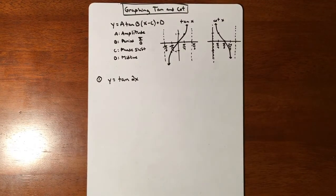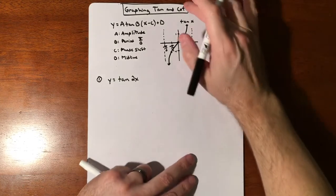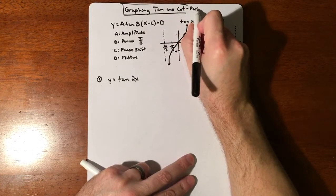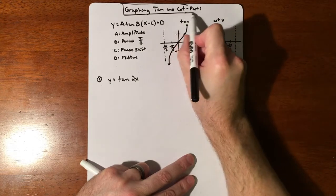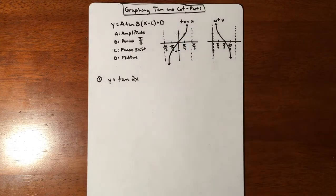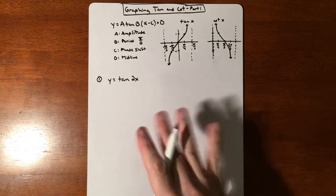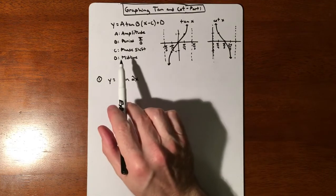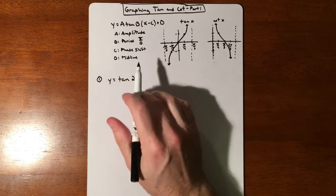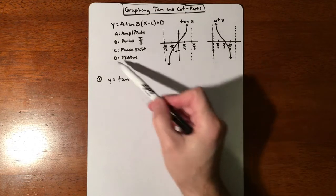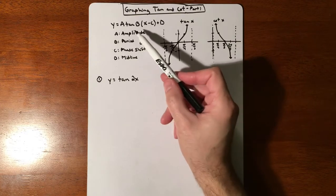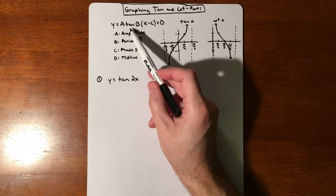In this lesson, we're going to be graphing tangent and cotangent — this is going to be part one. Tangent and cotangent is definitely different than your sines and cosines. I'm going to kind of cheat this a little bit. Technically it doesn't have an amplitude, the midline is kind of different, but I'm going to try to treat this using the same language and same everything that I would be doing with a sine and cosine.